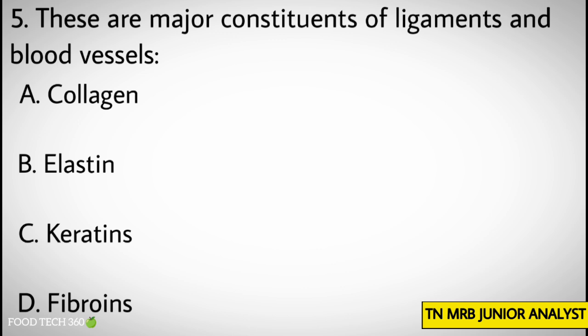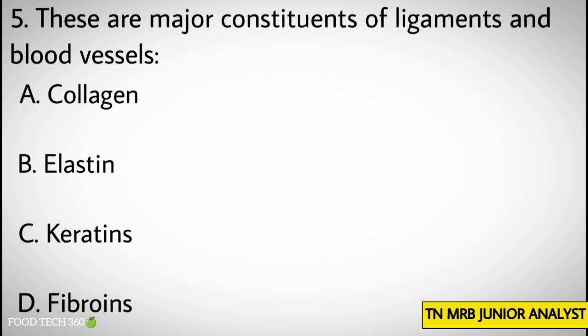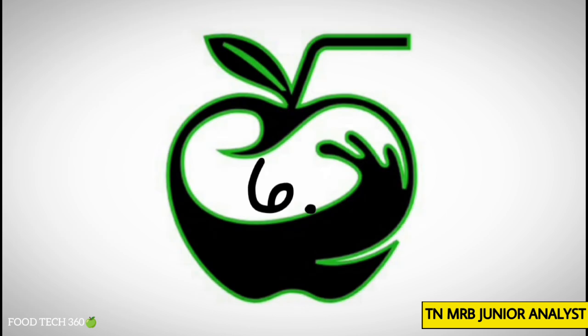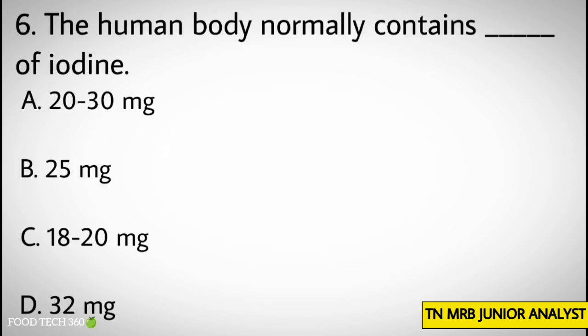Question number 5: These are major constituents of ligaments and blood vessels — Options: A. Collagen, B. Elastin, C. Caradins, D. Fibroins. Correct answer: B. Elastin.